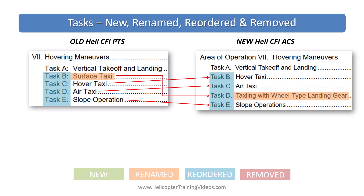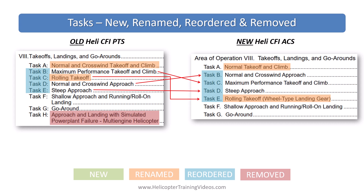Under hovering maneuvers, area of operation seven, there was a minor change to the title from 'surface taxi' to 'taxiing — wheel type landing gear,' just to make sure we weren't confused about sliding the helicopter along on skids. Under area of operation eight, takeoffs, landings and go-arounds, there are some minor changes to order. They took the word 'crosswind' out of the takeoff task title, leaving it as just 'normal takeoff,' which is strange because crosswind is still left in the approach task and is still a component of the normal takeoff and climb task. They also clarified that rolling takeoffs should not be done unless we have wheel-type landing gear.